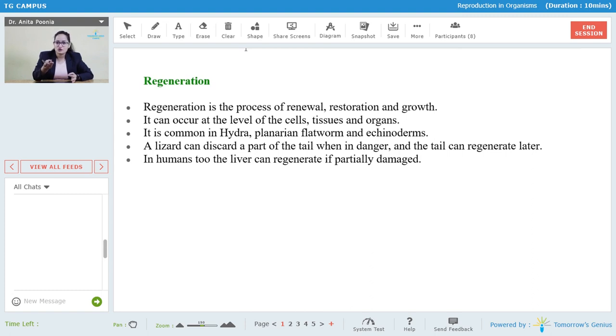You might be aware of this common example of a lizard. A lizard can discard a part of its tail when it is in danger and the tail can regenerate itself later on. You will get fascinated if I tell you the next example. The example is of the human liver. The human liver can also regenerate itself if it is partially damaged.